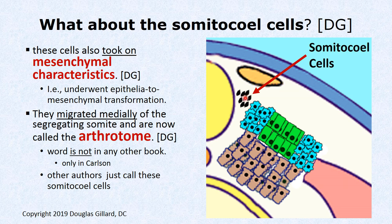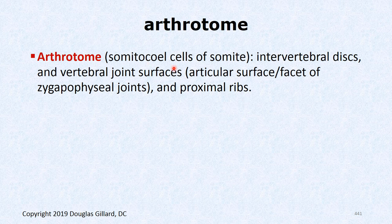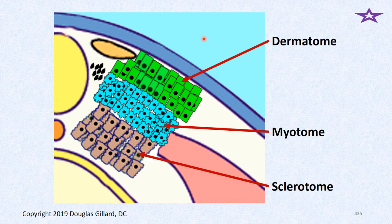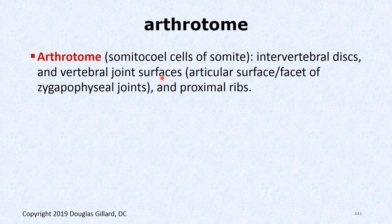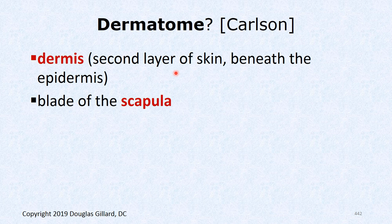The arthrotome — somitocele cells — gives rise to the intervertebral discs and the vertebral joint surfaces. Specifically, the sclerotome gives rise to the articular process, but the actual cartilaginous surface making up the zygapophyseal facet joint is created by the arthrotome cells, along with the proximal ribs.